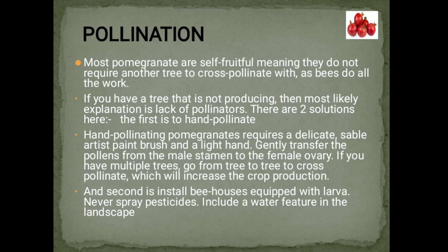Pollination. Most pomegranates are self-fruitful, meaning they do not require another tree to cross-pollinate — bees do all the work. If a tree is not producing, the most likely explanation is lack of pollinators. Two solutions: first, hand-pollinate using a delicate, sable artist's paintbrush — gently transfer pollen from the male stamen to the female ovary; if multiple trees are available, go from tree to tree to cross-pollinate to increase crop production. Second, install bee houses and never spray pesticides; include a water feature in the landscape.